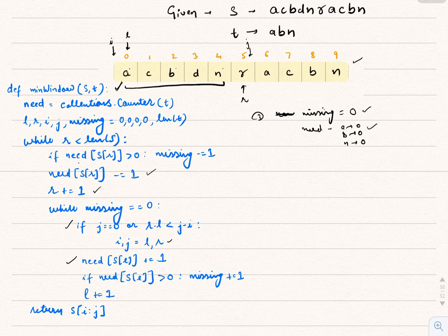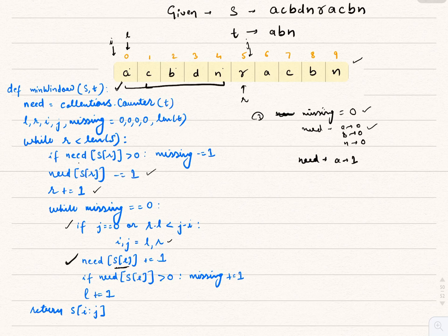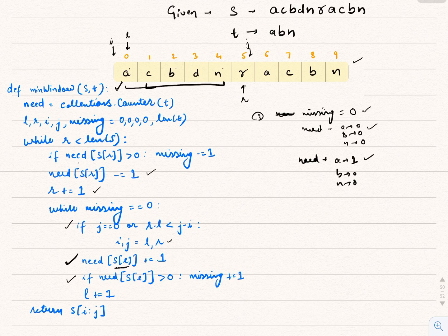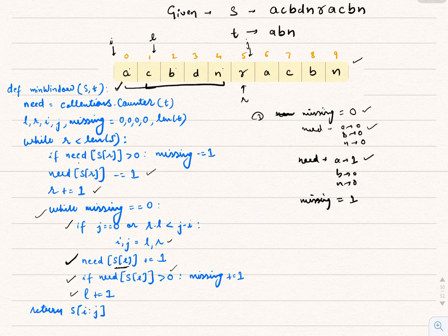Now we try to shrink from the left. S[L] is A, so `need[A]` increments to 1. Since `need[A]` is now greater than 0, `missing` increments to 1, and L increments to point to C. Since `missing` is now 1, not 0, we exit the shrink while loop and return to the main while loop to expand the right pointer.